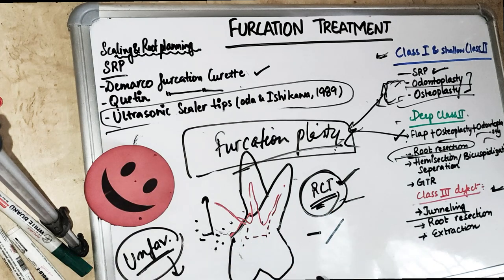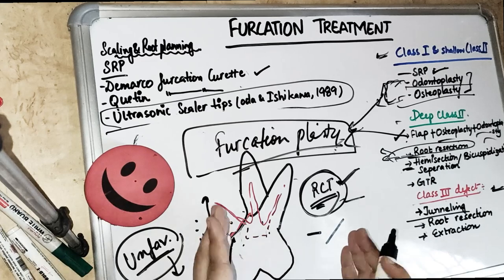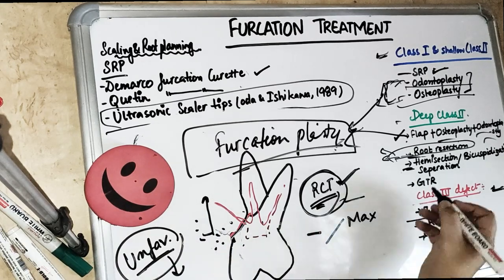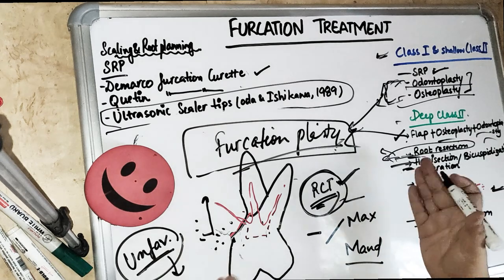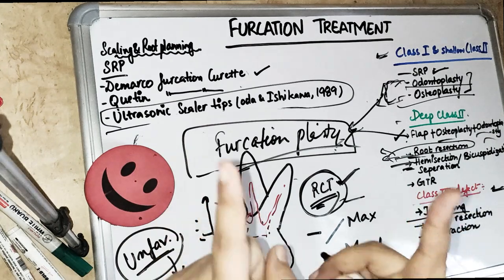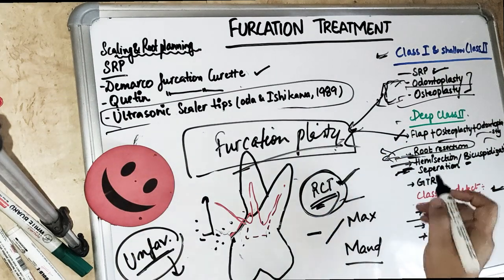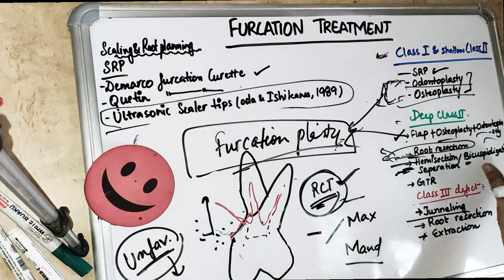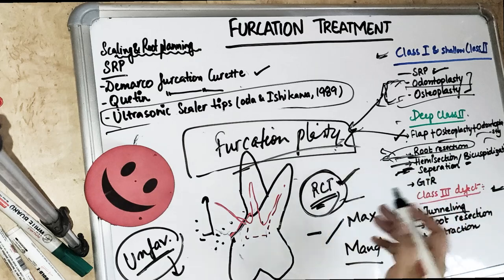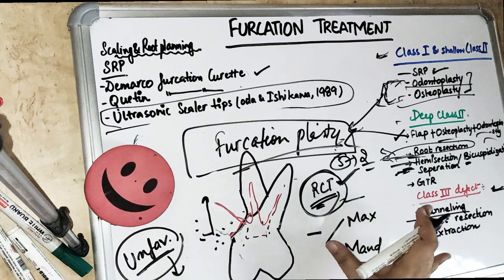The most commonly resected tooth is the maxillary molar. Root resection is most commonly done in maxillary teeth, while hemisection or bicuspidization is most commonly done in mandibular teeth. A memory tip: mandibular molars have two roots, so 'hemi' (half) and 'bi' relate to two. Root resection in maxillary molars involves three roots, and removing one leaves two. The most commonly resected root in the maxillary molar is the distobuccal root.